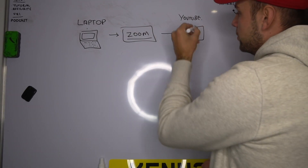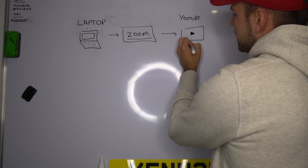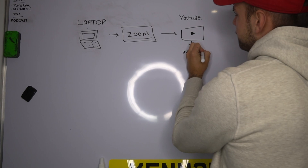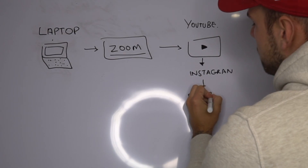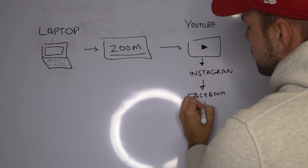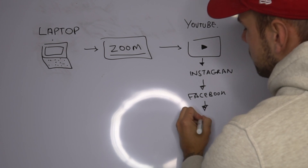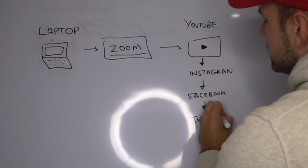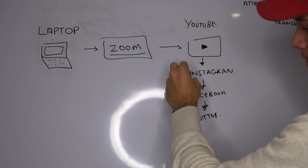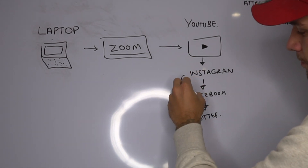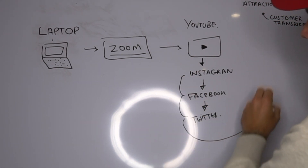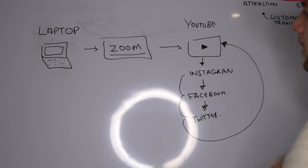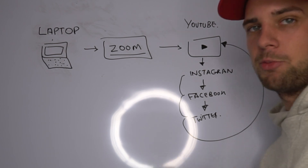Usually we start on YouTube and then we break this big podcast episode down for Instagram, Facebook, and some people like to also use Twitter. When you start distributing it to all of these platforms, you're then going to push them back to the long form video here. And YouTube is basically going to be your hub for everything.